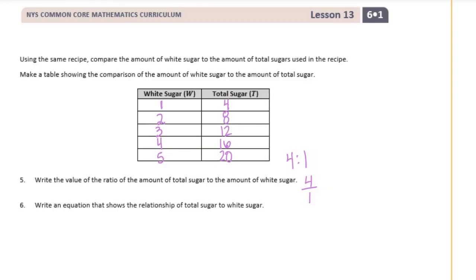Write an equation that shows the relationship of total sugar to white sugar. What we're doing each time is multiplying by four, so we could say four times the white sugar is equal to total sugar. Or if you wanted to do it the other way around, you could say one-fourth of the total sugar would be equal to the white sugar.